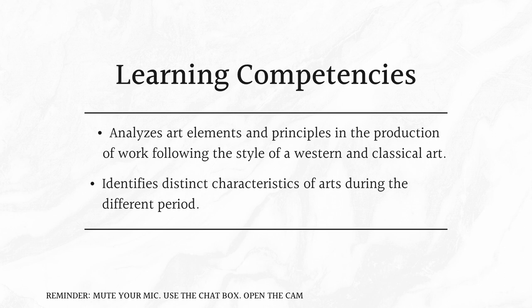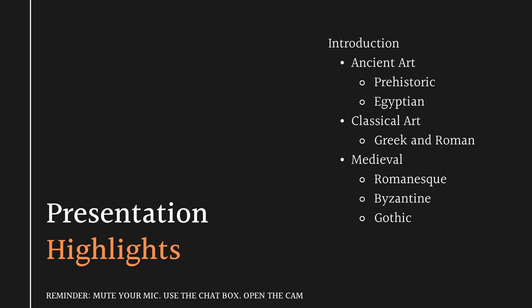Second, identify distinct characteristics of art during the different periods. As for our highlights, we will talk about the introduction to the ancient art, particularly prehistoric and Egyptian, classical art that includes Greek and Roman, and medieval art that includes Romanesque, Byzantine, and Gothic.